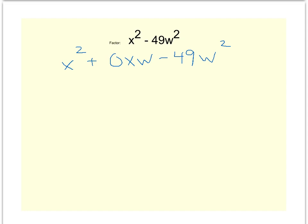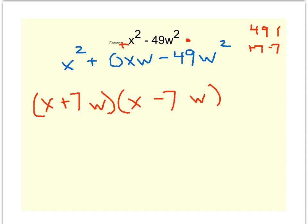This problem is really saying that they want x squared plus 0xw minus 49w squared. So it's asking what multiplies to give you a negative 49 and adds to give you a 0. Well, when you do your factors of 49, you have 49 and 1, and you have 7 and 7. The only way to add to give you a 0 would be a plus 7 minus 7. So when you break this up, the x squared becomes x and x, the w squared becomes w and w. You'll use a plus 7 and a minus 7.